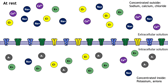As covered in the previous lesson, at rest there is an uneven distribution of ions on either side of the membrane. The inside of the neuron is more negatively charged than the outside. For a typical neuron at rest, sodium, chloride, and calcium are concentrated outside the cell, whereas potassium is concentrated inside. This ion distribution leads to a negative membrane potential.